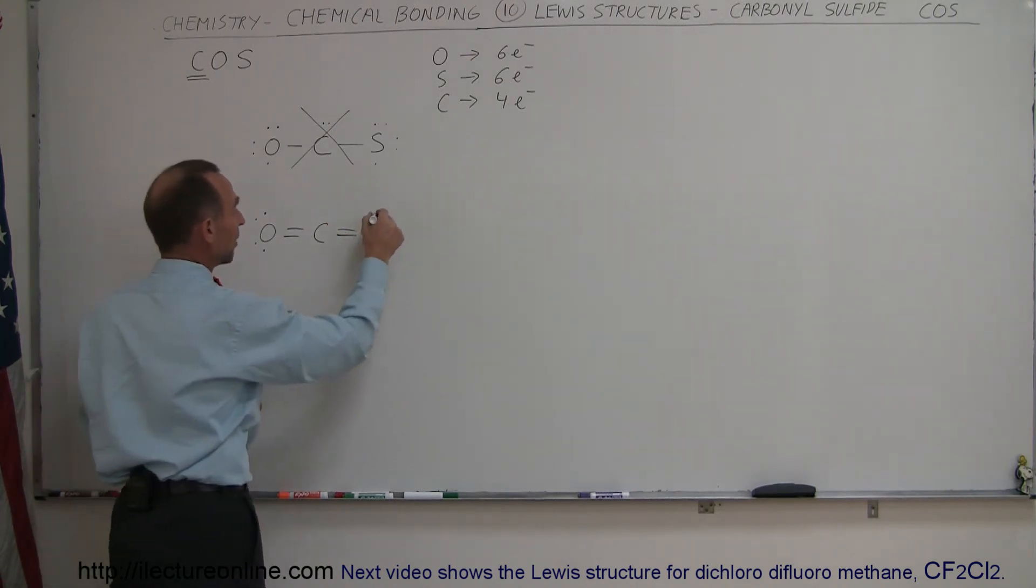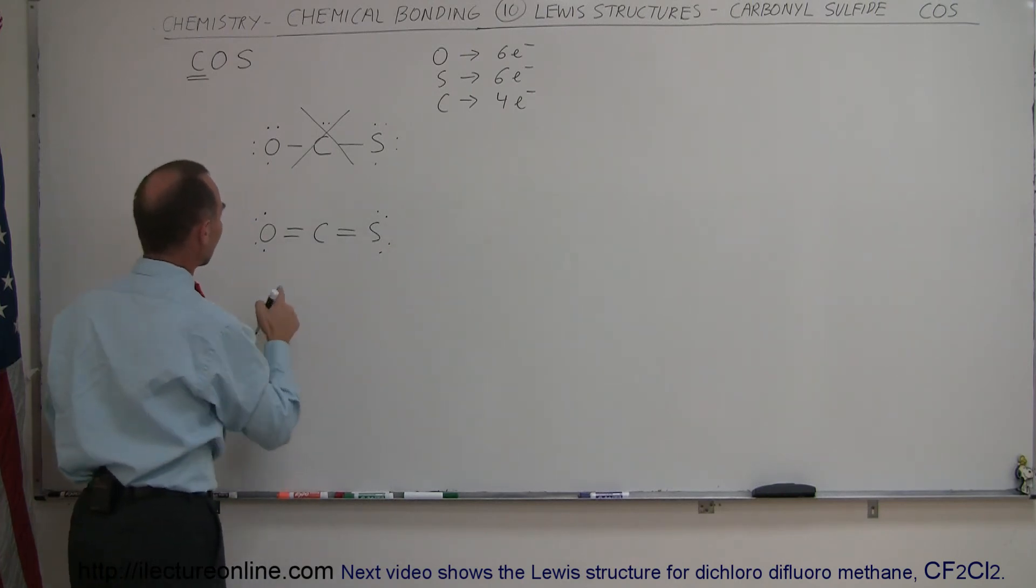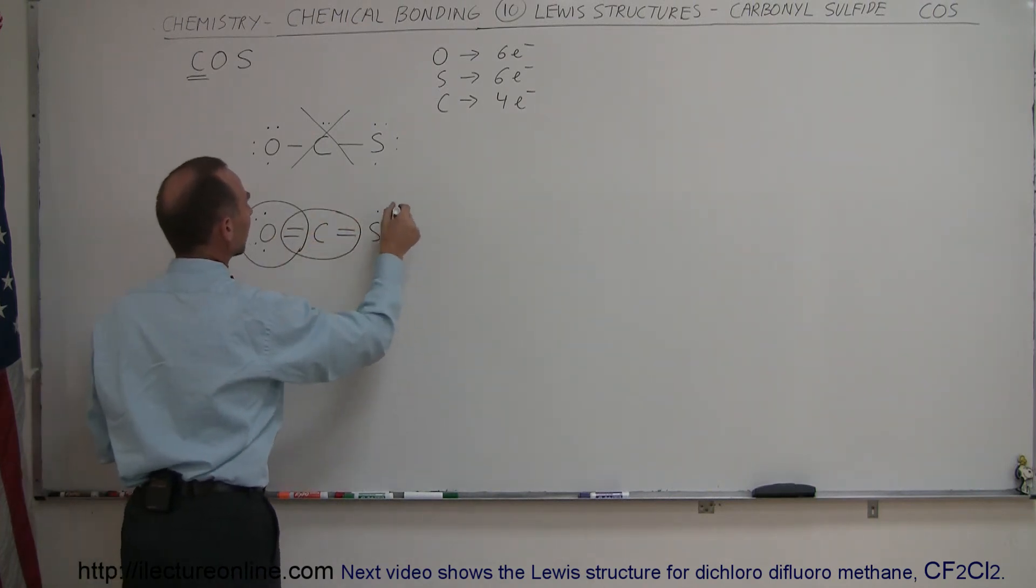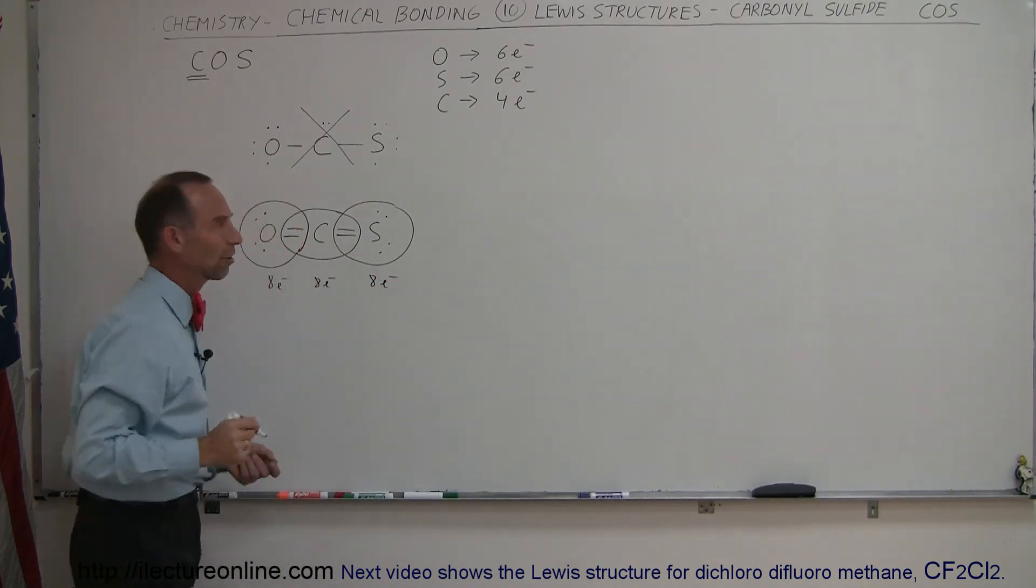And now when we take a look, we realize that, notice two, four, six, eight electrons part-time for oxygen, eight electrons part-time for carbon, and eight electrons part-time for sulfur. So the octet rule is satisfied with this kind of Lewis structure.